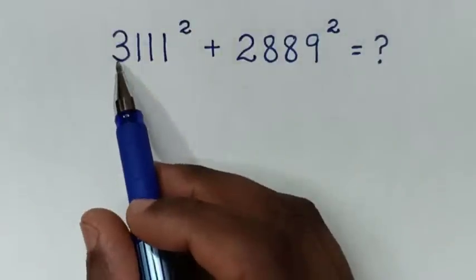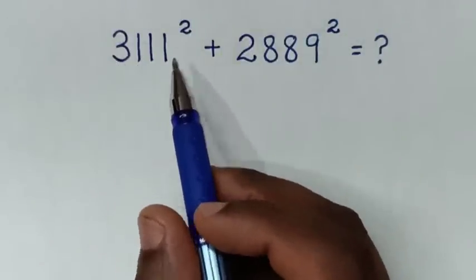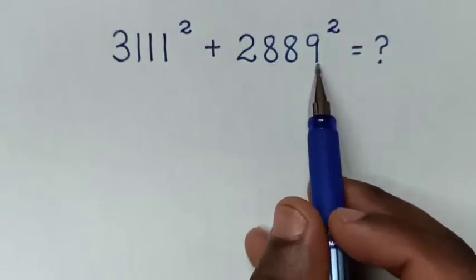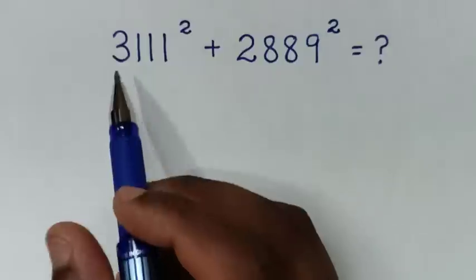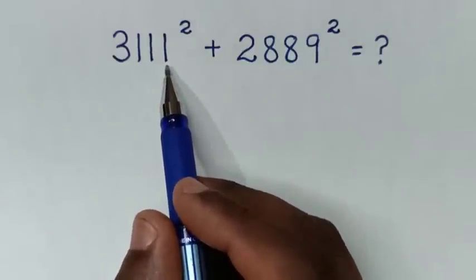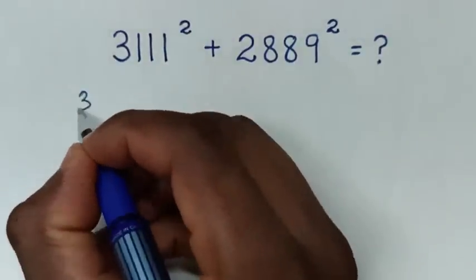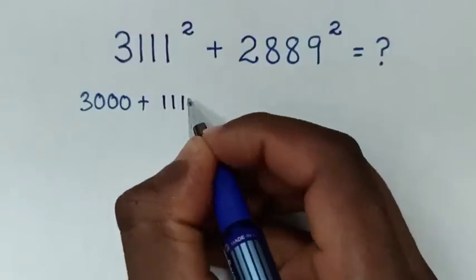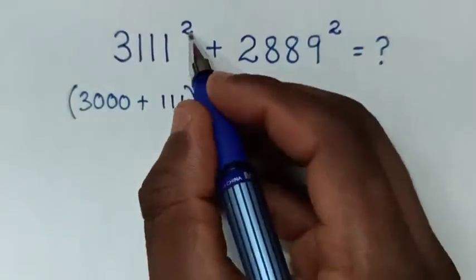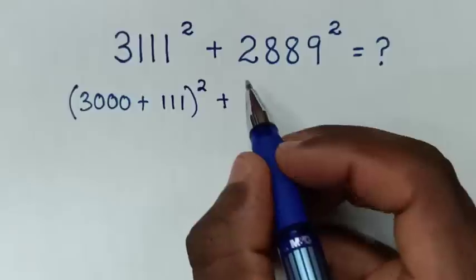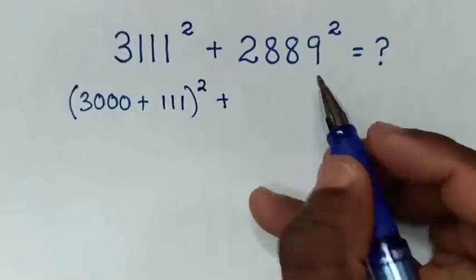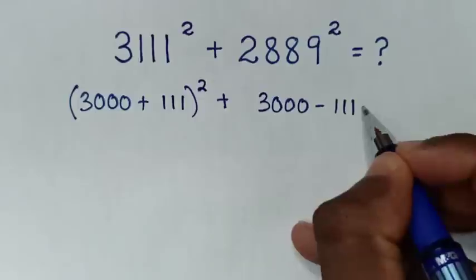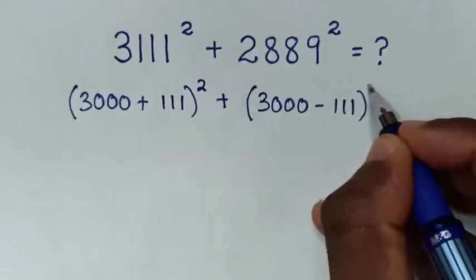Hello! How to solve 3,111 squared plus 2,889 squared. From here, 3,111 is the same as 3,000 plus 111, in bracket, squared. Then plus 2,889 is the same as 3,000 minus 111, in bracket, squared.